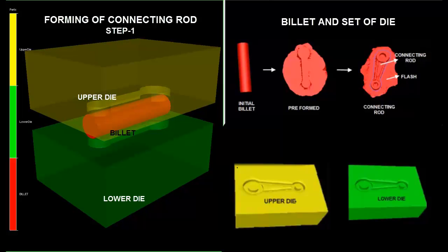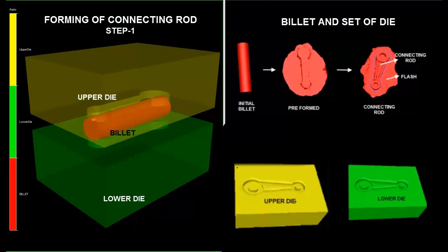Connecting rod is manufactured by upsetting a cylindrical billet using closed impression die. On the left hand side, the simulation describes step 1 of forming of connecting rod.